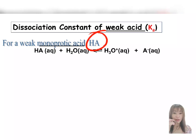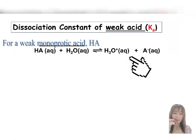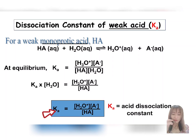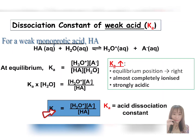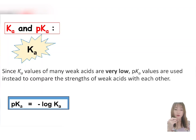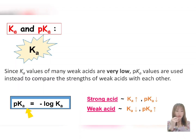When a weak acid, HA, dissolves in water, we can write the general equation for the ionization of a weak acid in water. Applying the law of chemical equilibrium, the equilibrium constant for this dissociation is expressed as Ka. The concentration of H₂O is not included in the Ka equation because the degree of dissociation of water is extremely small. Since Ka values of many weak acids are very low, pKa values are used instead to compare the strength of weak acids. Similar to pH, pKa is the negative log of Ka.